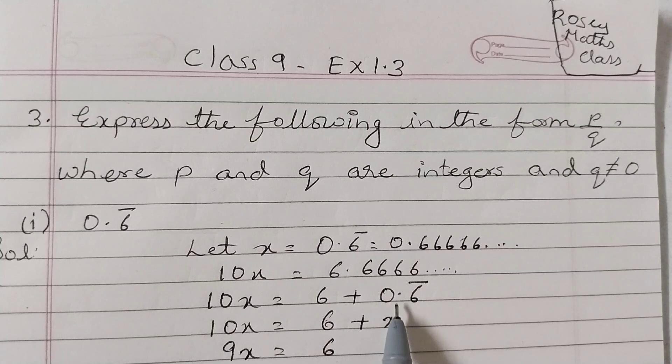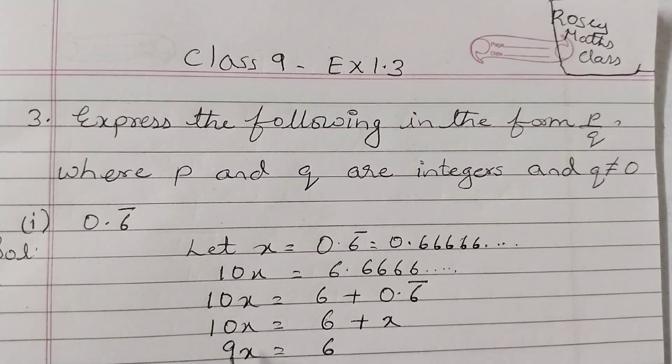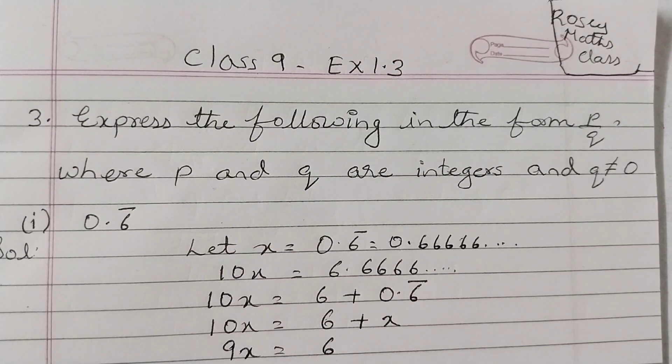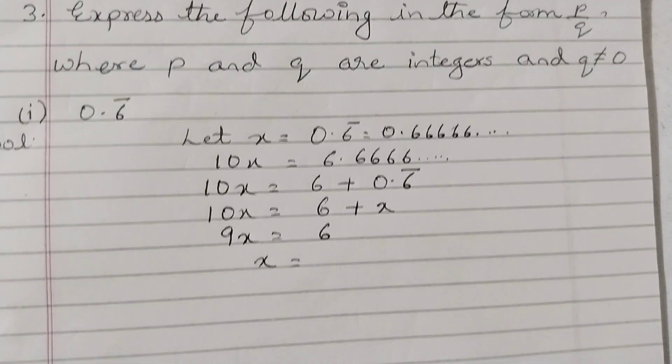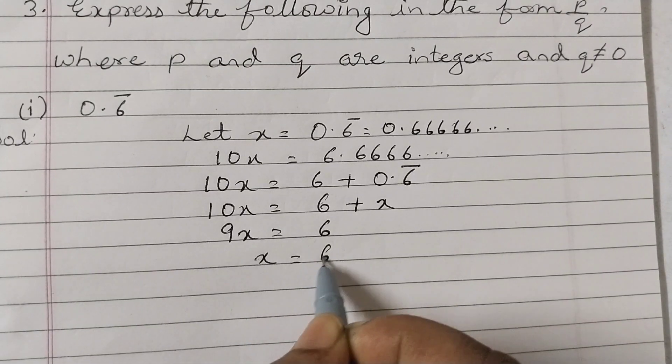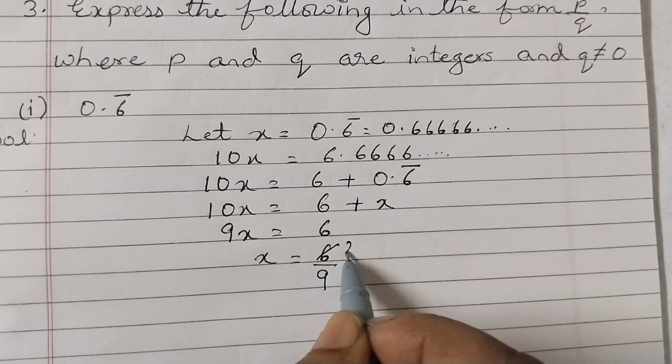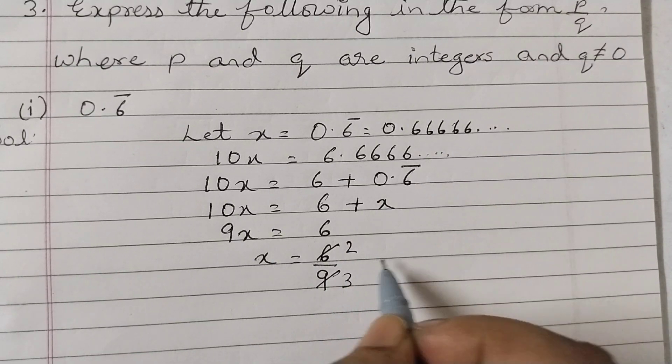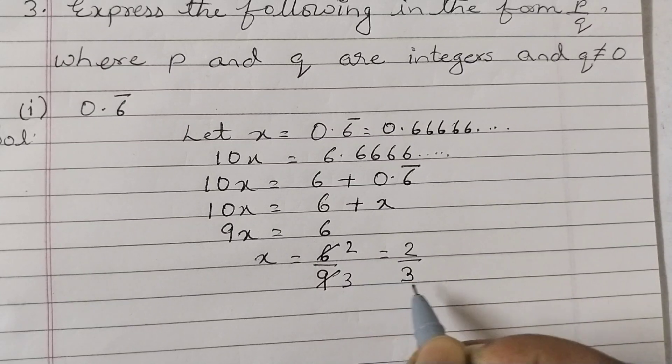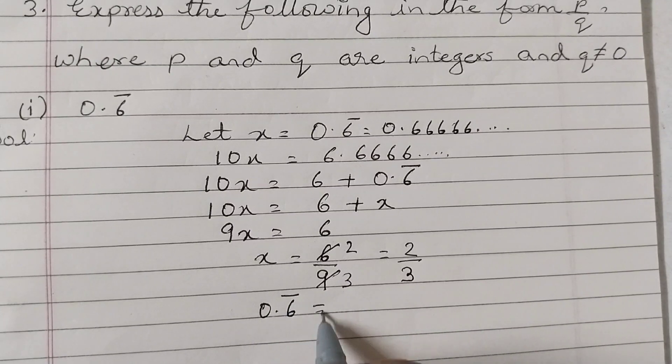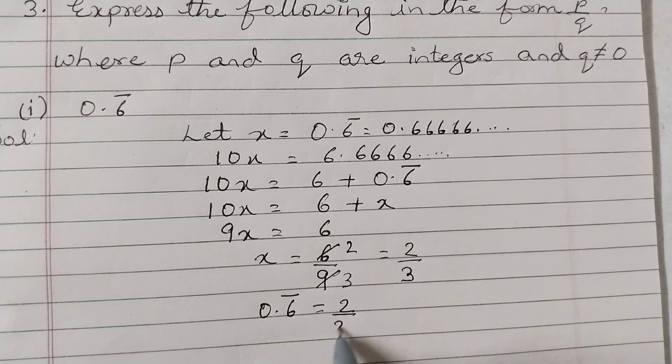10x equals 6 plus x. Get x on the other side. So we will write 10x minus x, which will become 9x. So 9x equals 6, x equals 6 by 9. Simplify this: 3 twos are 6, 3 threes are 9, so this is 2 by 3. So we can say that 0.6̄ is equal to 2 by 3.